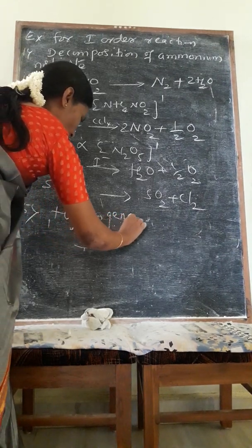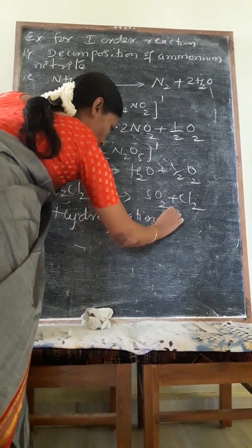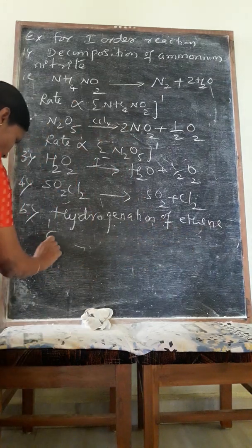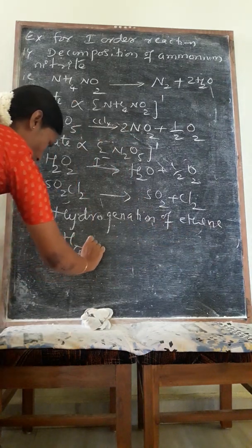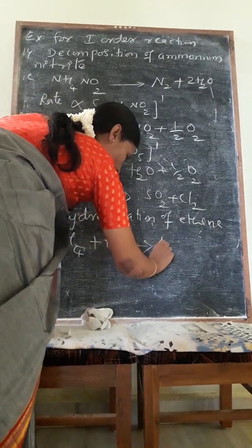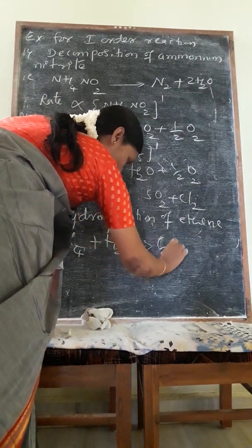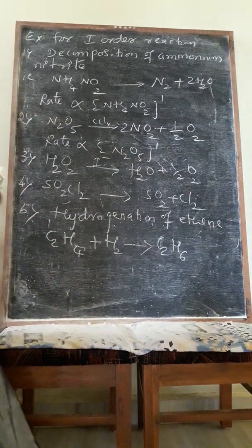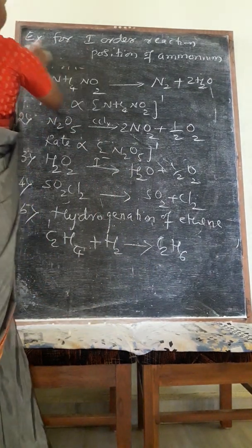Fifth example is hydrogenation of ethene. Ethene formula is C2H4. Hydrogenation means plus H2, product is C2H6. It is also a first order reaction example.